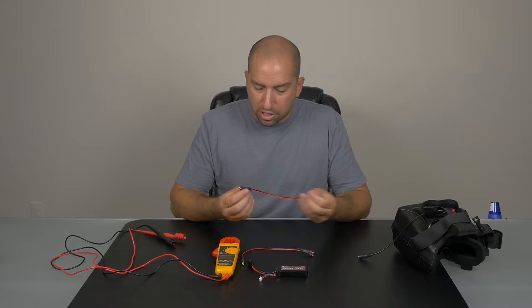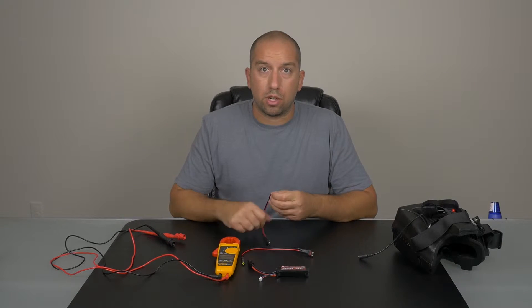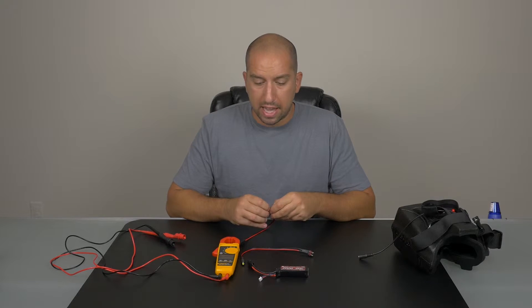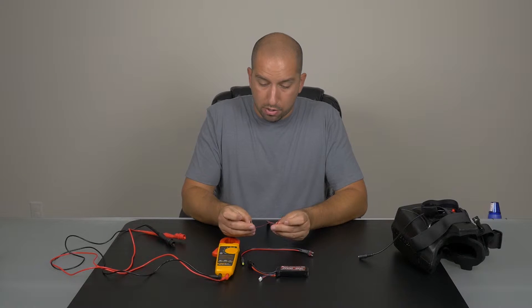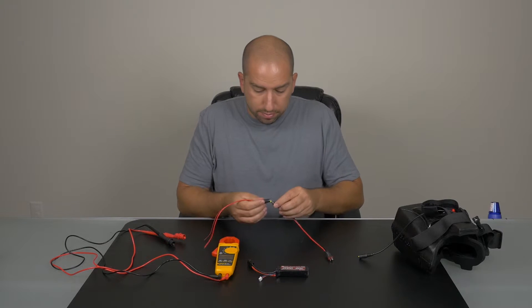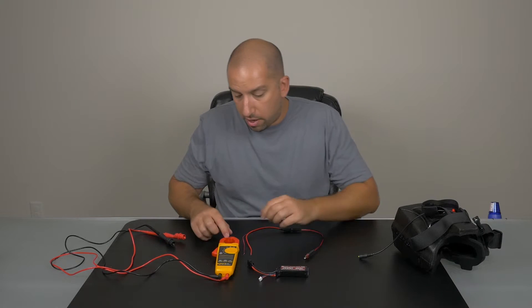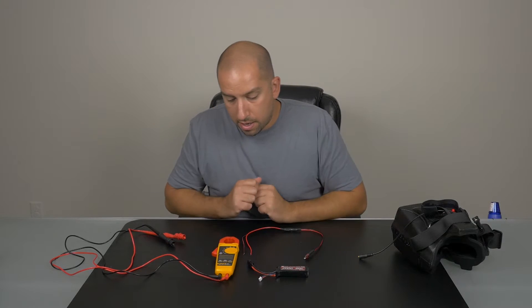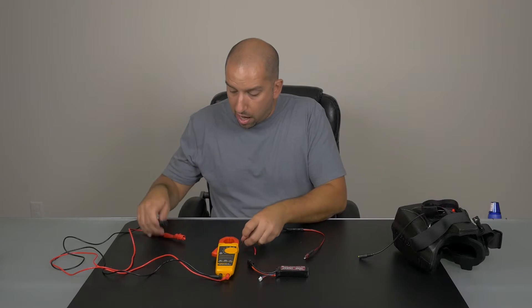So what we're going to do is actually take the counterpart to this, which is the female terminal. And it came with the kit and you'll see that in the links below. We're just going to split the two wires. We're going to connect it. And we're going to use our Fluke voltmeter here in the resistance setting to test the lines.